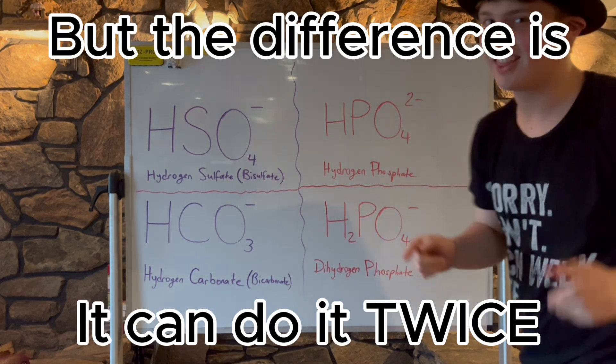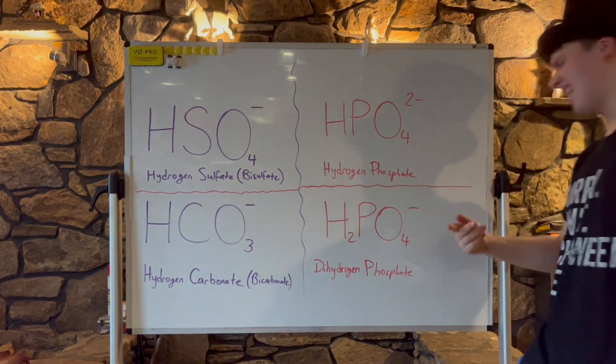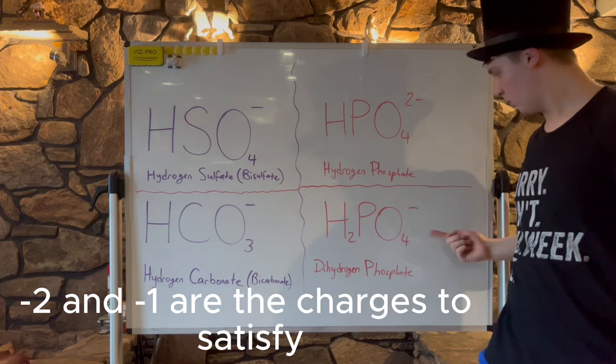Phosphate can do it too, but the difference is it can do it twice: hydrogen phosphate to dihydrogen phosphate. Minus two and minus one are the charges to satisfy.